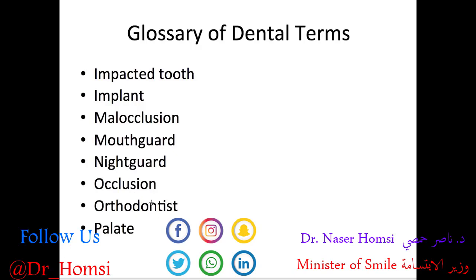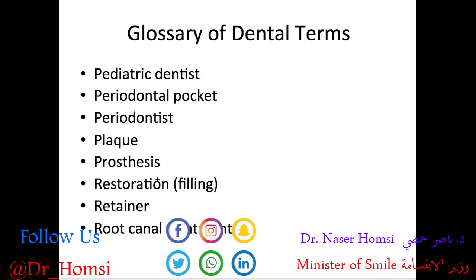An orthodontist is an ADA specialty — a type of dentist who works to correct the position of teeth with braces and other instruments. The palate refers to the hard and soft tissues that form the roof of the mouth. A pediatric dentist specializes in treating children. A periodontal pocket is a deep area between a tooth and the gums resulting from gum disease. A periodontist specializes in treating the periodontal tissues surrounding the teeth — the gums, bone, and periodontal ligament.